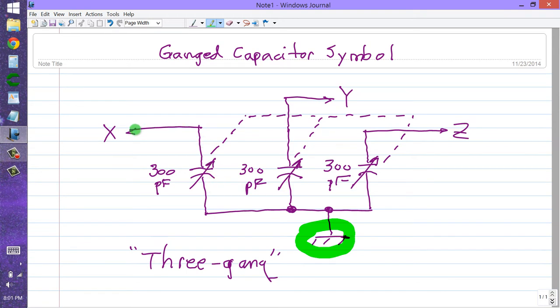So these would go to inductors X, Y, and Z, presumably the same value, and you'd have three parallel inductance capacitance circuits tracking along with each other courtesy of this ganged capacitor.